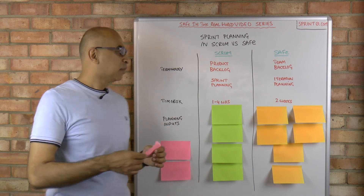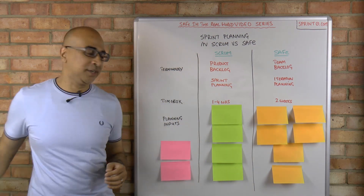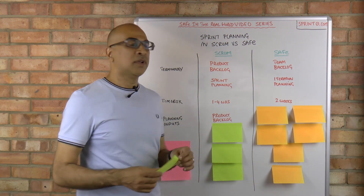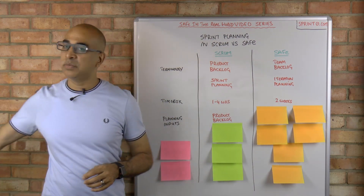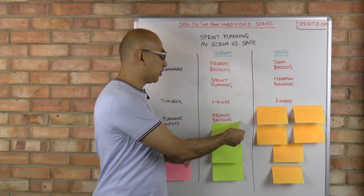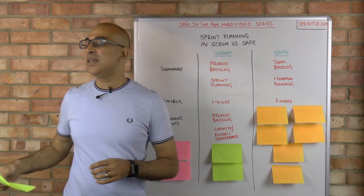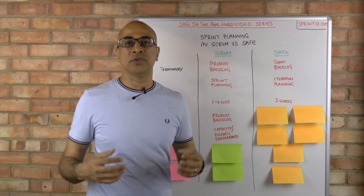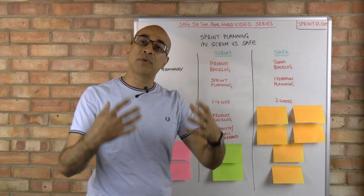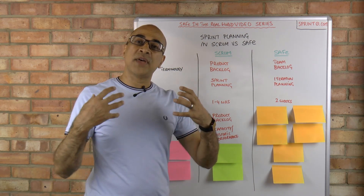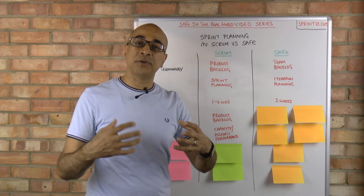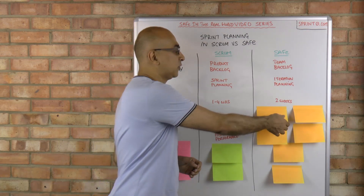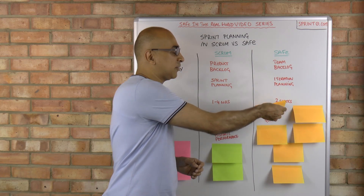Next: planning inputs — and this is a big difference. In Scrum we have the product backlog as input, along with the team's capacity, their historic performance, and the product increment the team may have been working on in previous sprints.